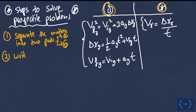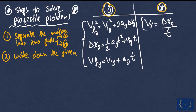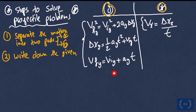Then, step two: write down what is given to you. For example, if they give you the time for the motion, you can use it in both the x direction and the y direction. Keep in mind the only connection between the motion in the y and the x direction is solely time, because the object will take the same time to travel vertically as it does horizontally.